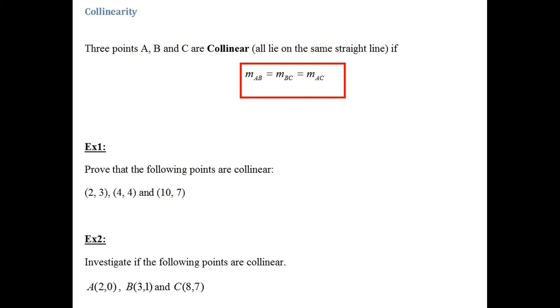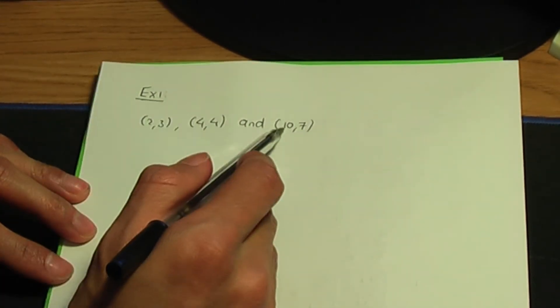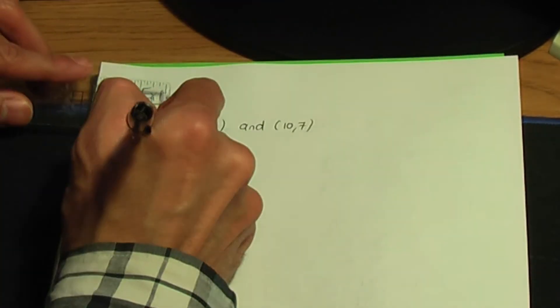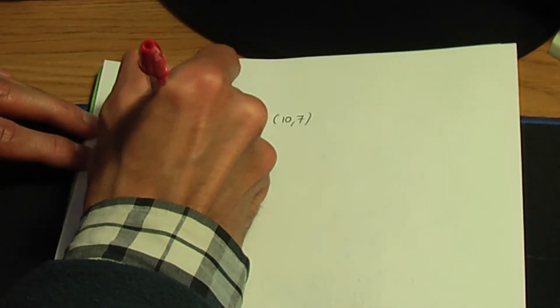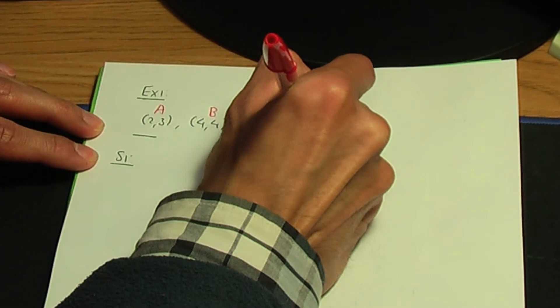Let's see this with an example. Example 1: prove that the following points are collinear. We have three points: A(2, 3), B(4, 4), and C(10, 7). Back to the paper and pen. Step one: label the points A, B and C. I'm going to call the first point A, the second point B, and the third point C.